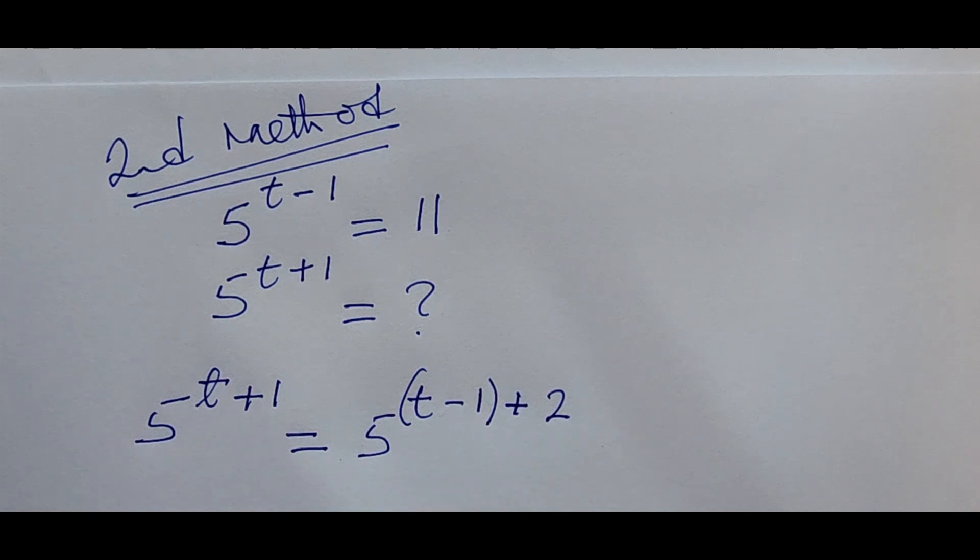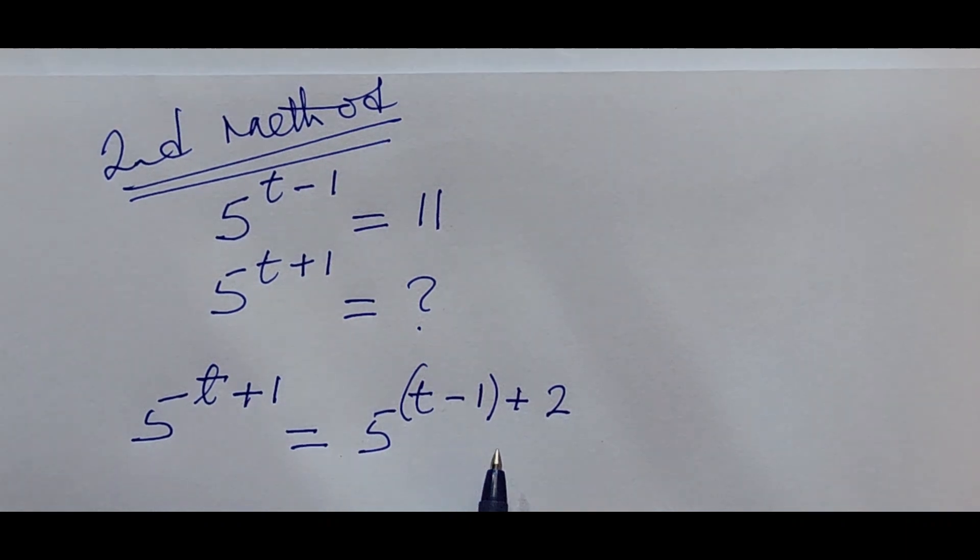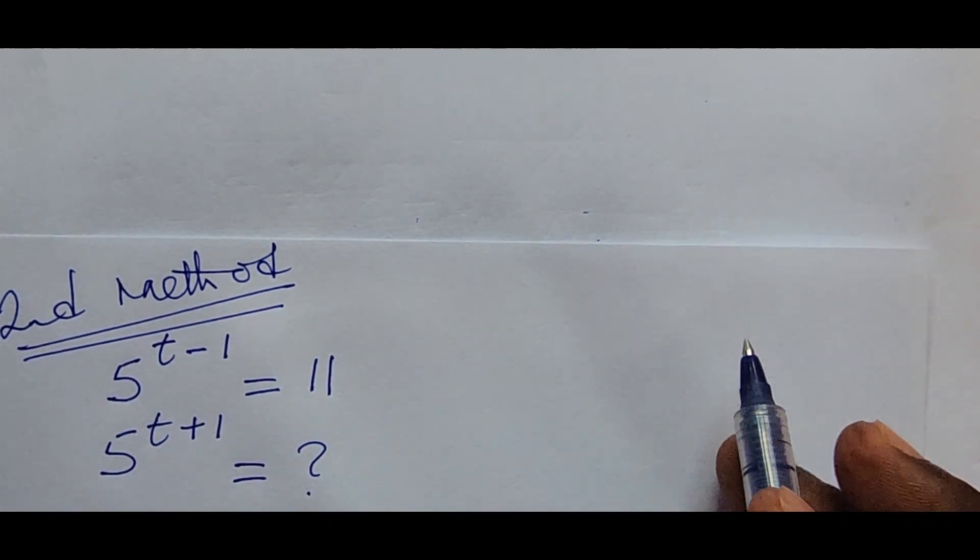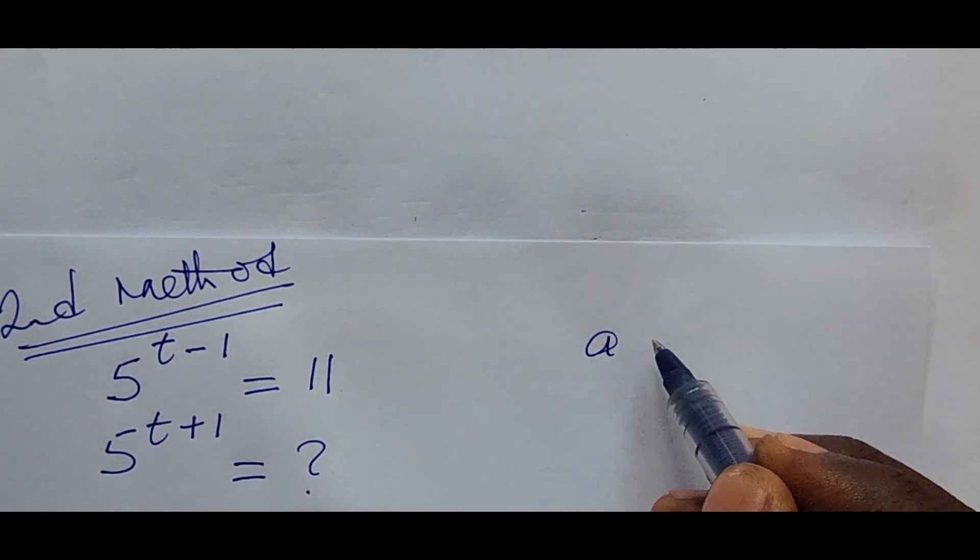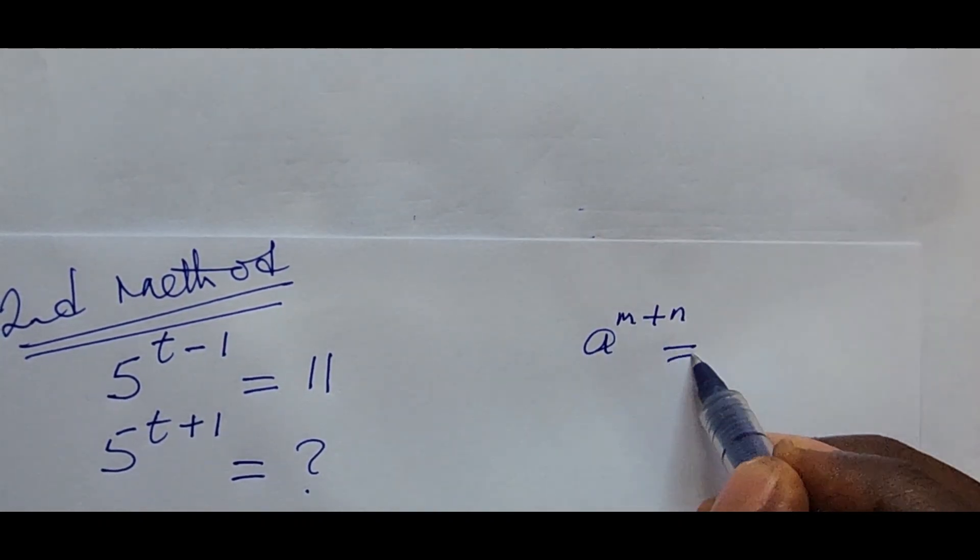Because if we use this to open up this, this will give us this, because minus 1 plus 2 will give us plus 1, which is t plus 1. Now we're going to rewrite the whole of this expression. Remember the expression in indices or the law in indices which says that if you have a to the power of m plus n, this is the same thing as a to the power of m times a to the power of n.